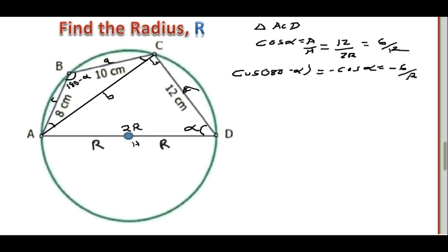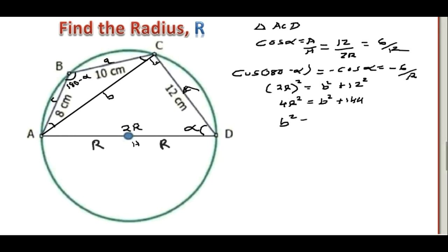Still on triangle ACD — since it is a right-angle triangle, we can use the Pythagorean theorem. The hypotenuse squared, (2R)² = 4R², equals the sum of the squares of the two other sides: B² plus 12² = B² plus 144. So making B² the subject gives B² = 4R² minus 144. We are done with triangle ACD.